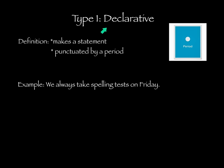Our first type of sentence is declarative. A declarative sentence is a sentence that makes a statement. It is also punctuated by a period. So it declares something and is punctuated by a period, like you see on the right. Our example is: we always take spelling tests on Friday. This is just a statement telling everyone when you take your spelling tests.